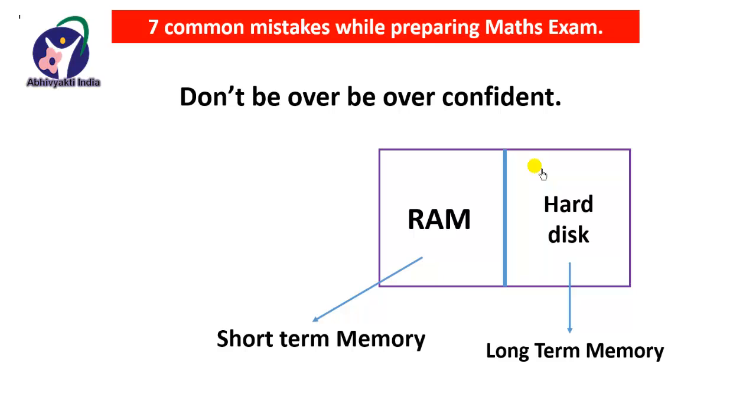Friends, I divide the brain into two parts: one part is RAM and another is hard disk. RAM is short-term memory and hard disk is long-term memory. Whenever you revise, knowledge goes from RAM to hard disk, meaning it's saved in long-term memory. Now you will feel that when it's in long-term memory, there is no need to revise, and that happens with overconfident students. He feels that now I have saved everything in my hard disk and now there is nothing to revise.